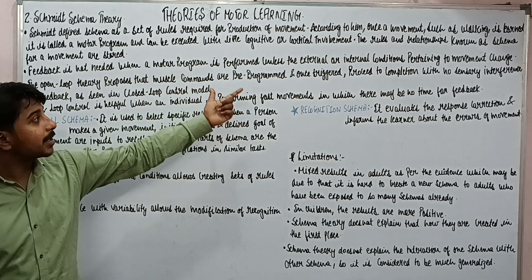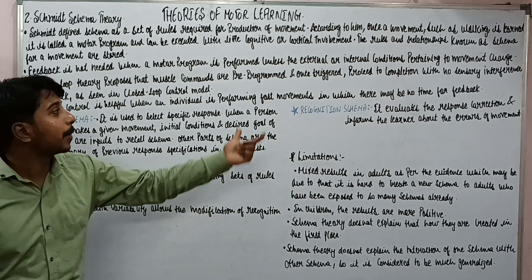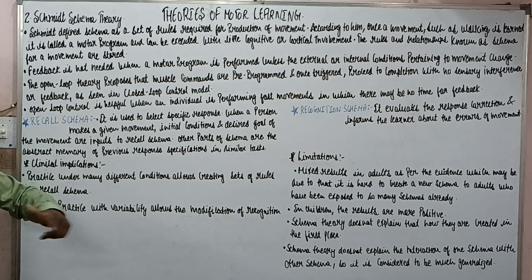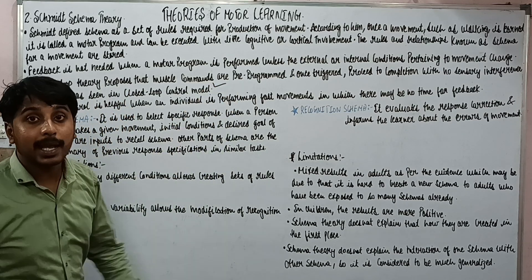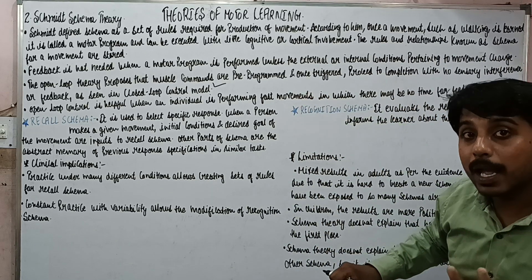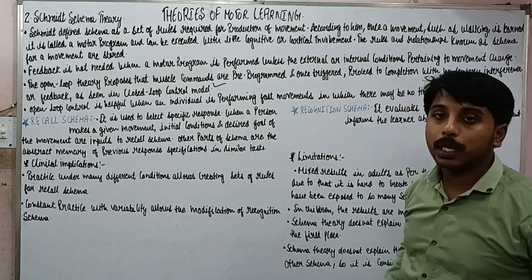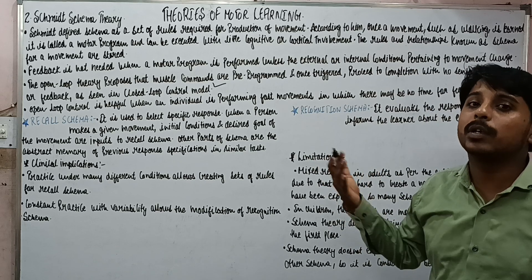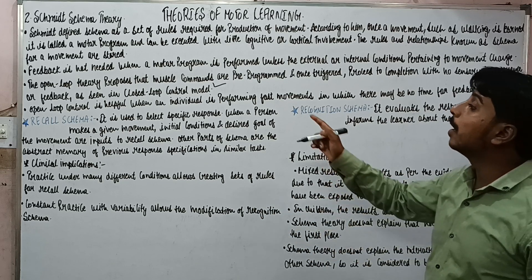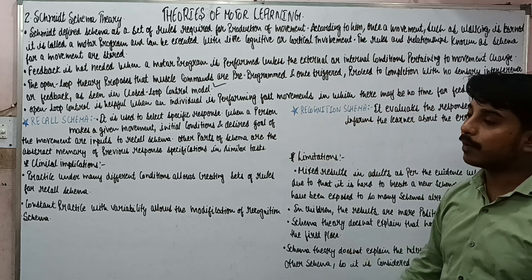The open loop theory proposed that muscle commands are pre-programmed — that is, they are pre-programmed, and once they are triggered they proceed to complete the movement with no sensory interference, without any feedback, as seen in the closed loop model. Open loop control is helpful when an individual is producing fast movement.